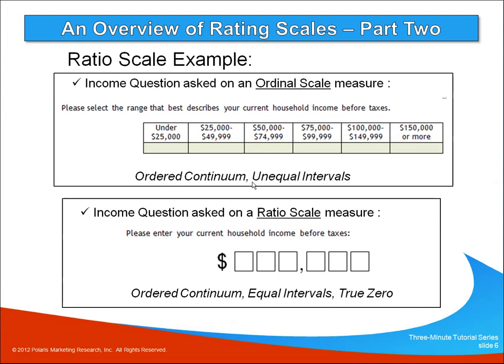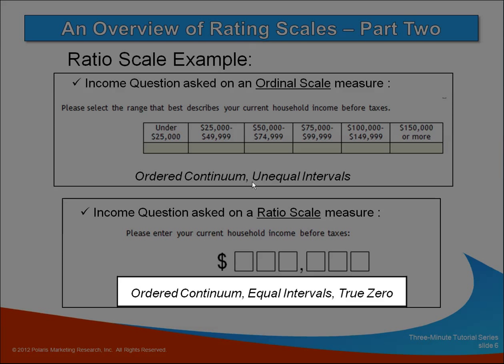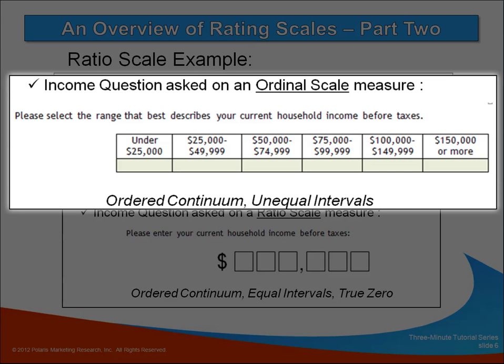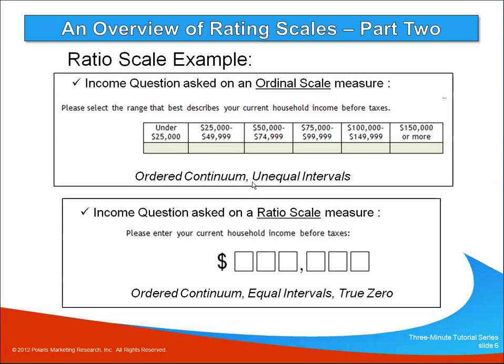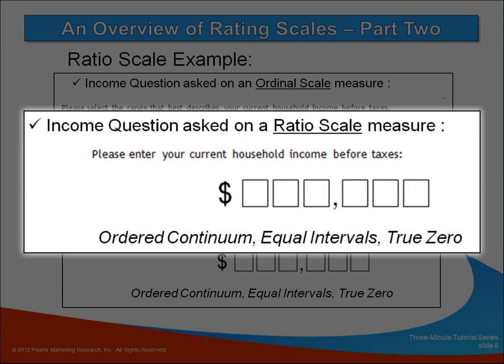Our last type of measurement is a ratio scale. Recall that a ratio scale uses rank ordering, the intervals are equal, and in this case there's a true zero. Examples might include things like length, time, or money. Income might be a good example of a ratio scale question; however, it's typically asked on an ordinal scale as in this example — notice that the scale choices are in rank order but the intervals are not equal. To ask the income question on a true ratio scale measure, respondents would actually have to enter their income level, not as a category choice but as a real number.